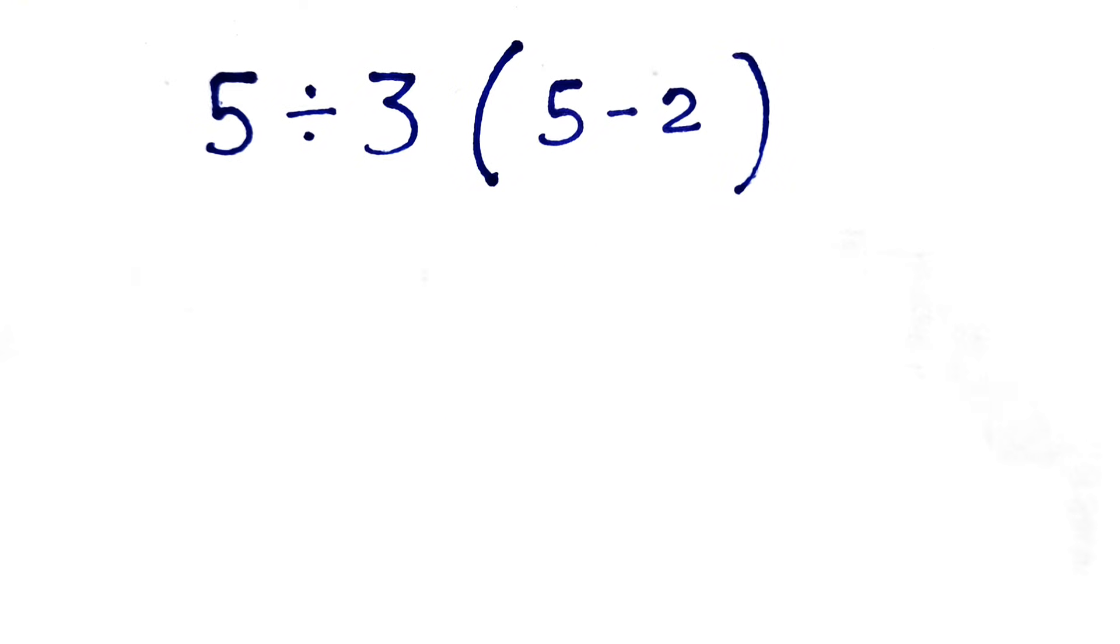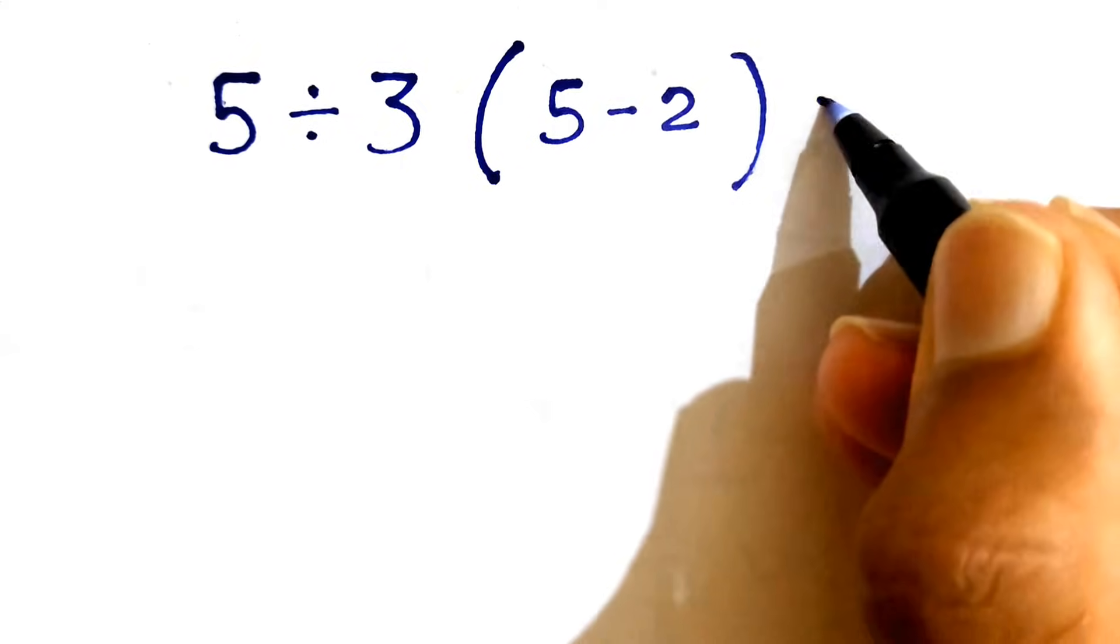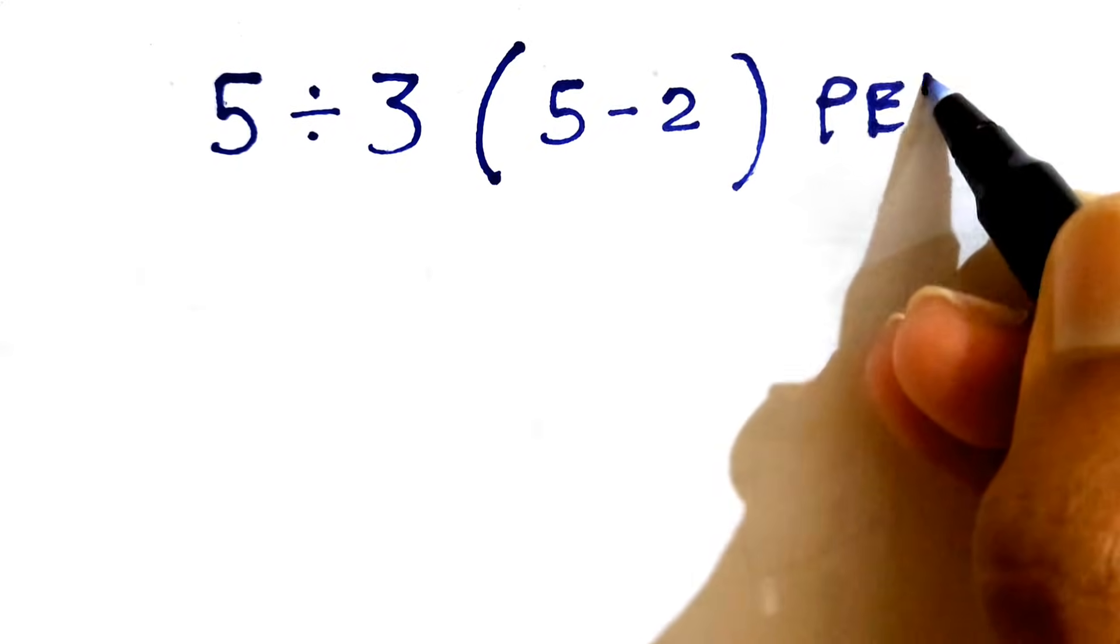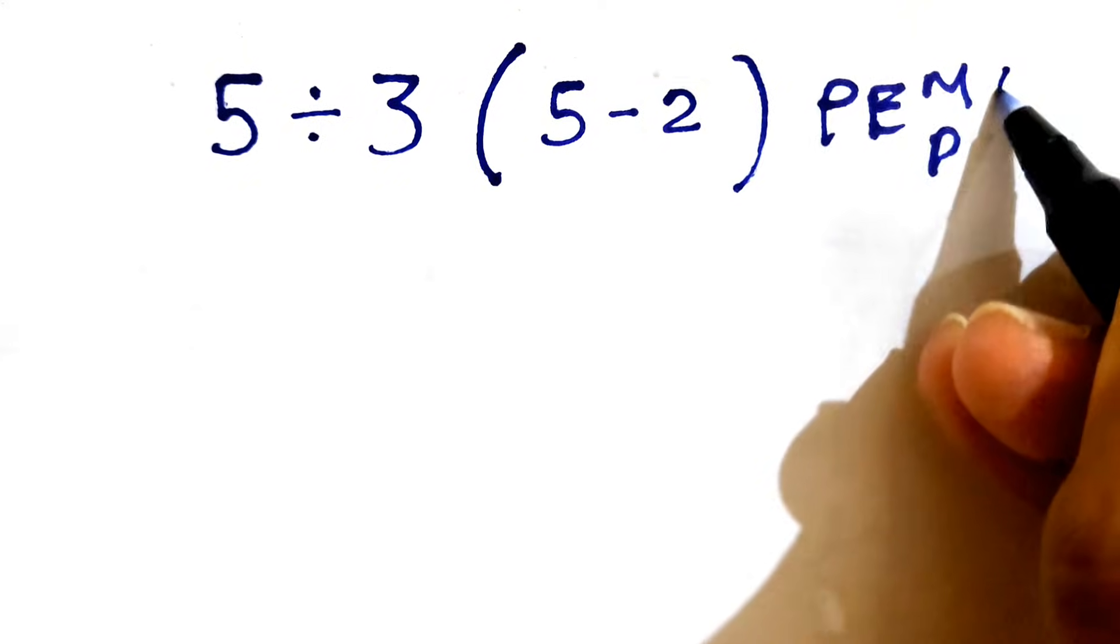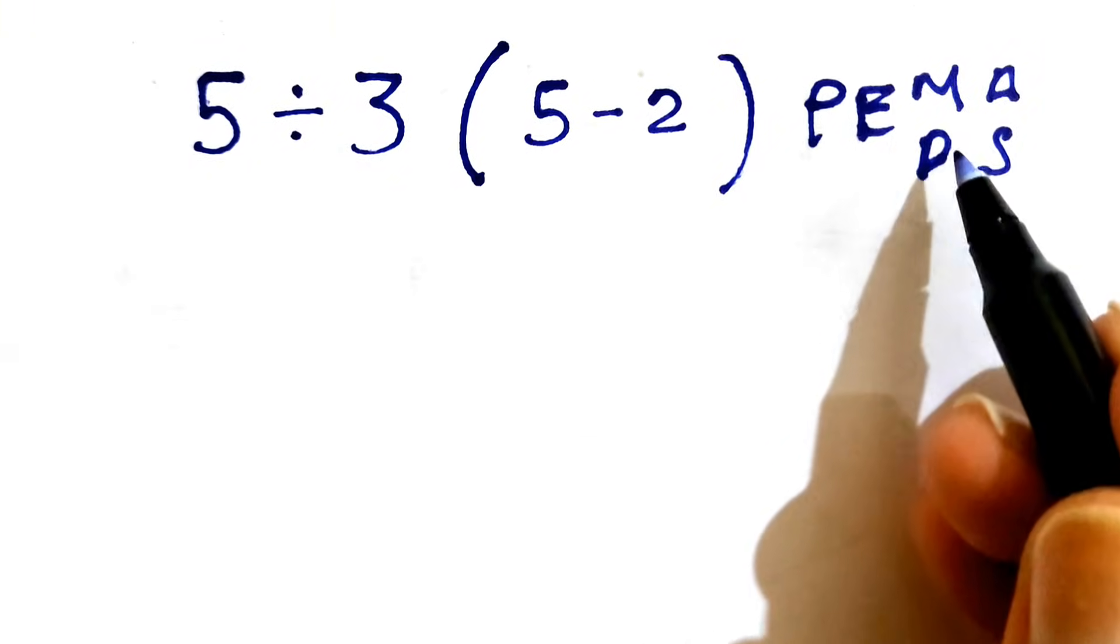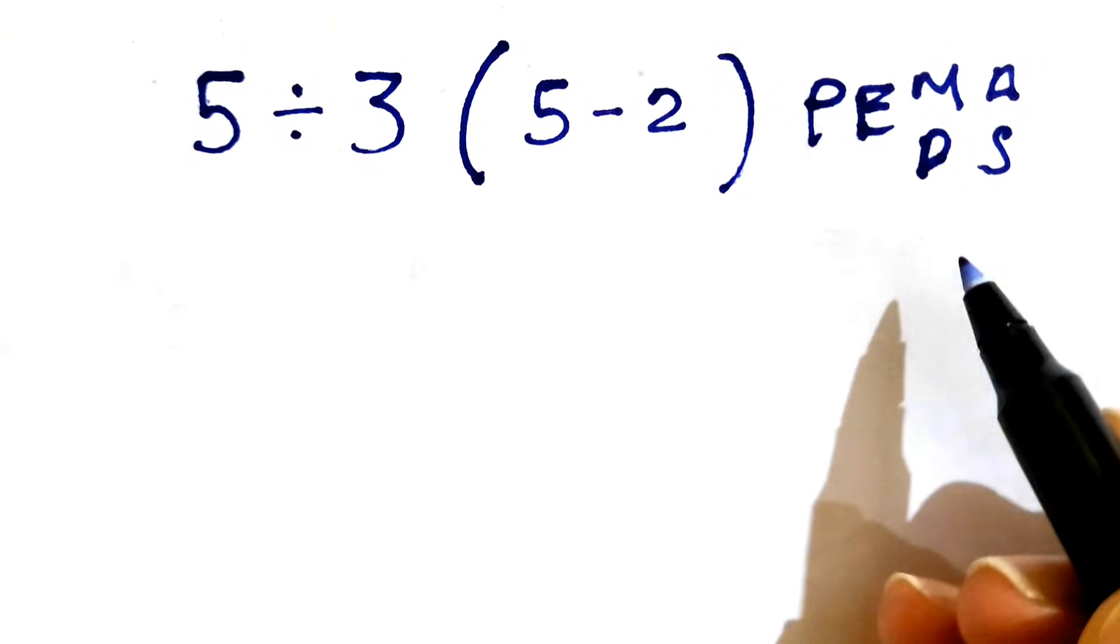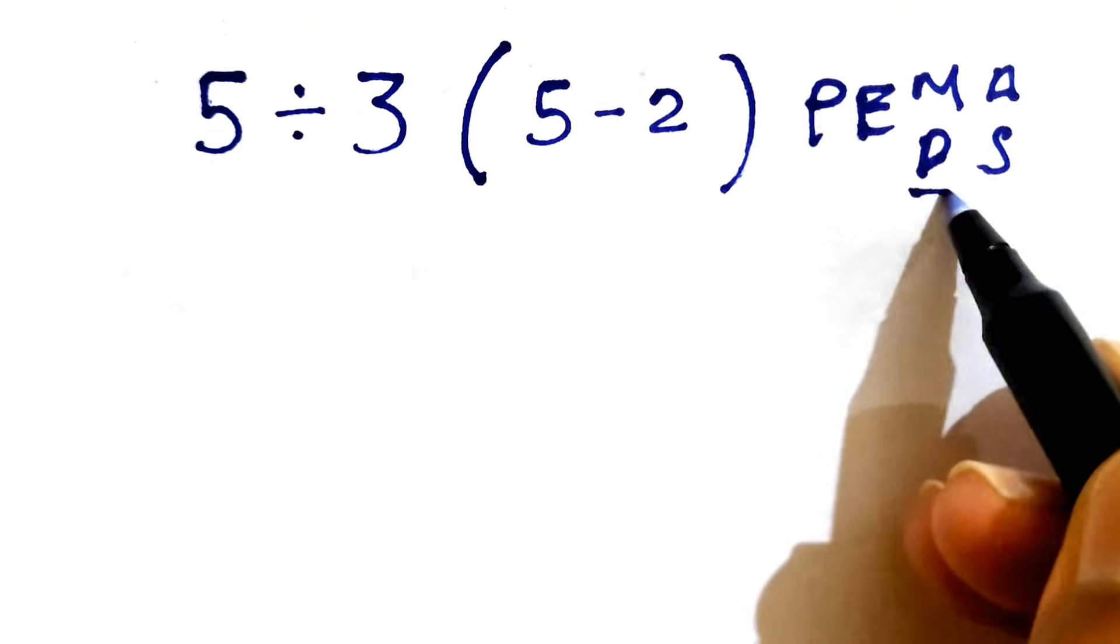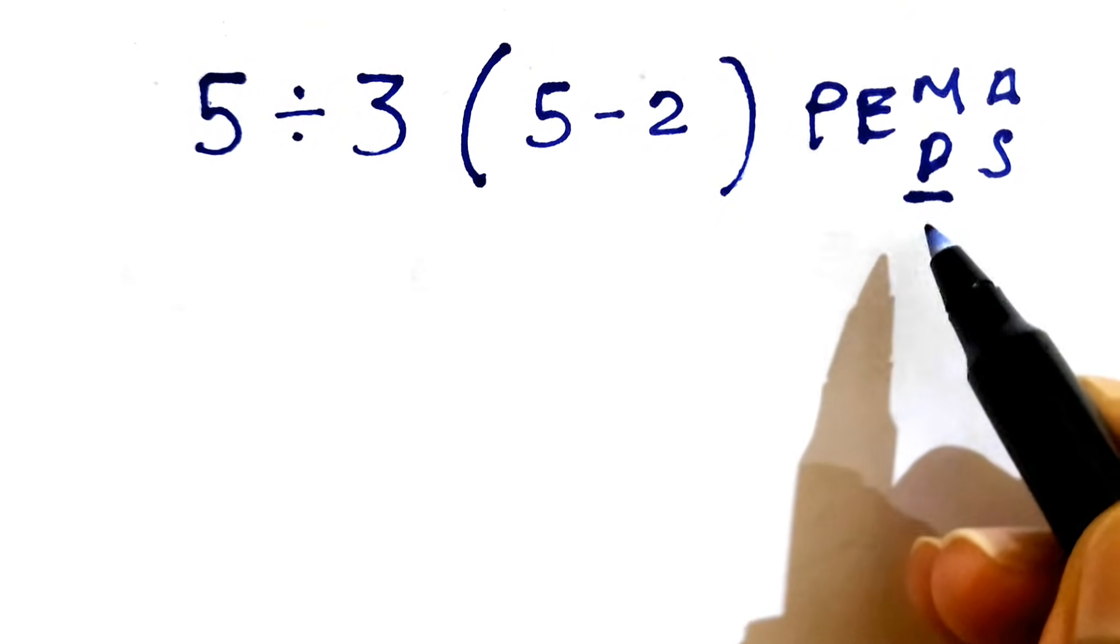Order of operations, also known as PEMDAS, which stands for parenthesis, exponents, multiplication, division, addition, and subtraction. The priority of multiplication and division is the same, but we need to go from left side towards the right.